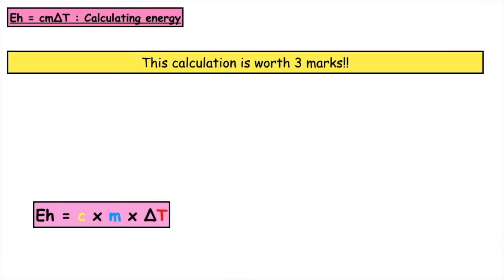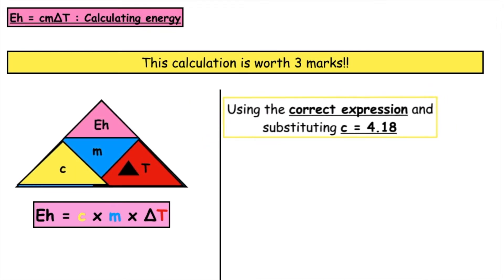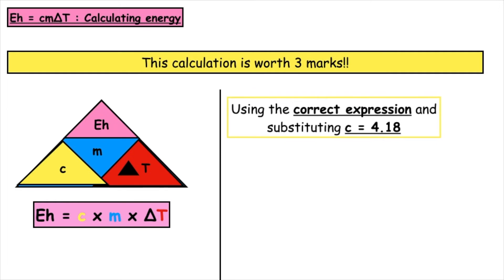When we use the energy triangle, this calculation is worth three marks. The first mark is for using the correct expression — that can be rearranging the triangle to find another subject — and then usually substituting the constant for water, which is 4.18, which can be found inside the data booklet.